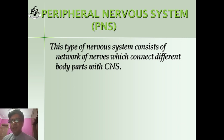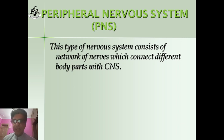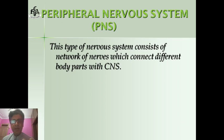The Peripheral Nervous System — these are the network of nerves scattered throughout the body. They connect the different body parts with the Central Nervous System.